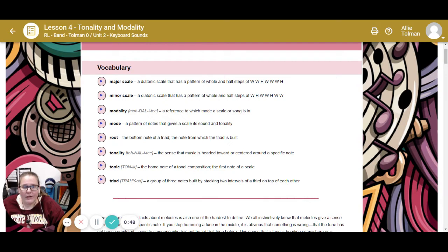Now, we not only have major scales, but we have minor scales too, and there are several different kinds of minor scales. This minor scale is a diatonic scale that has a pattern of whole and half steps: whole, half, whole, whole, half, whole, whole. So, major. Minor.